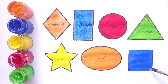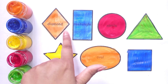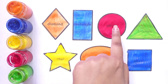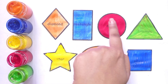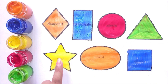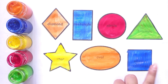Children, please like this video and subscribe to this channel. Let's check again: diamond shape, rectangle, circle, triangle, star, oval, square.